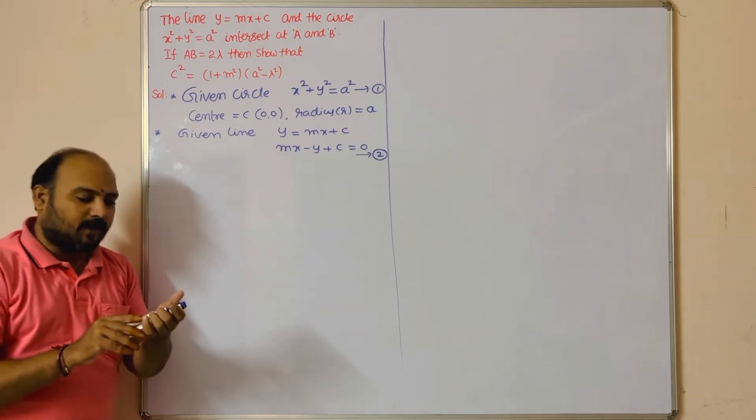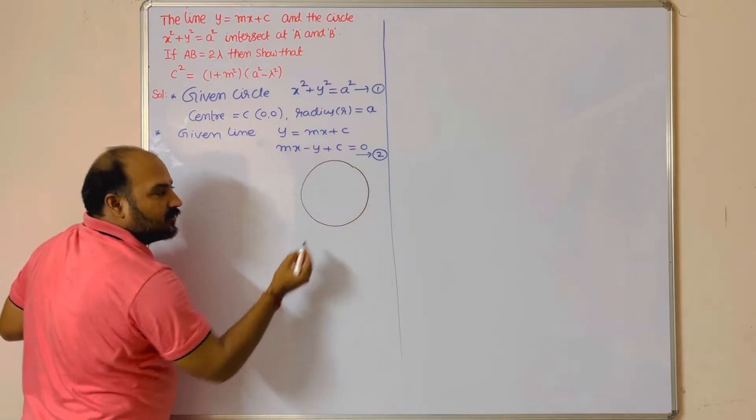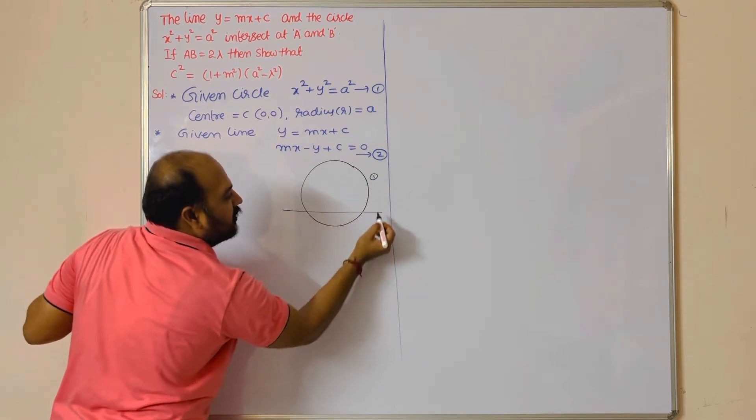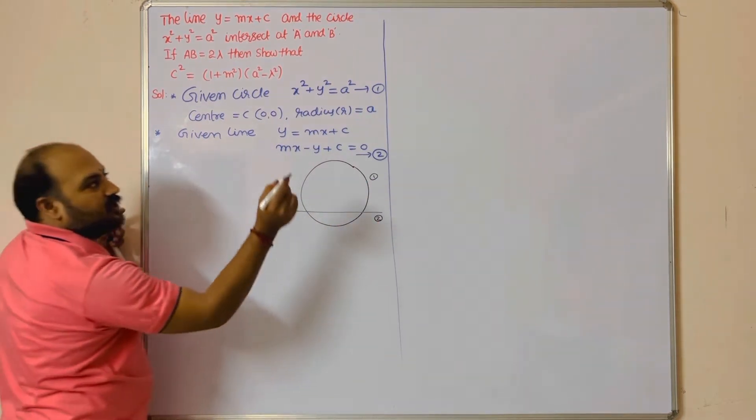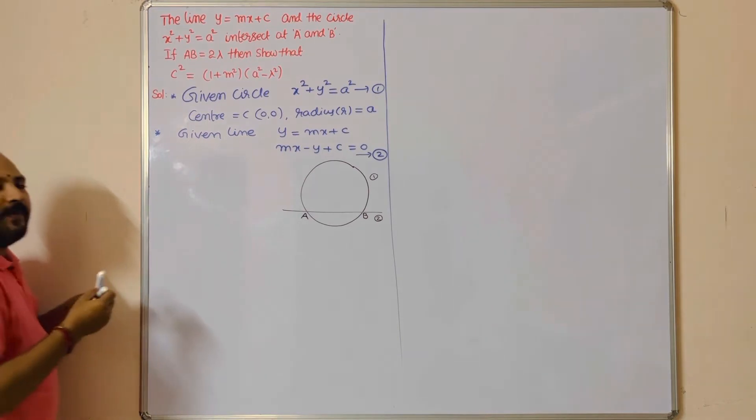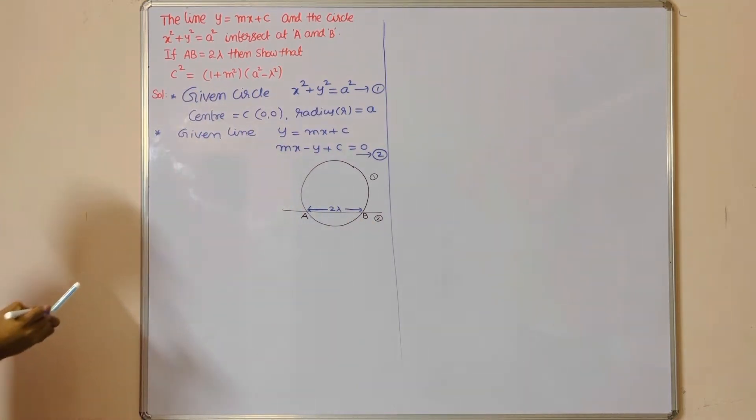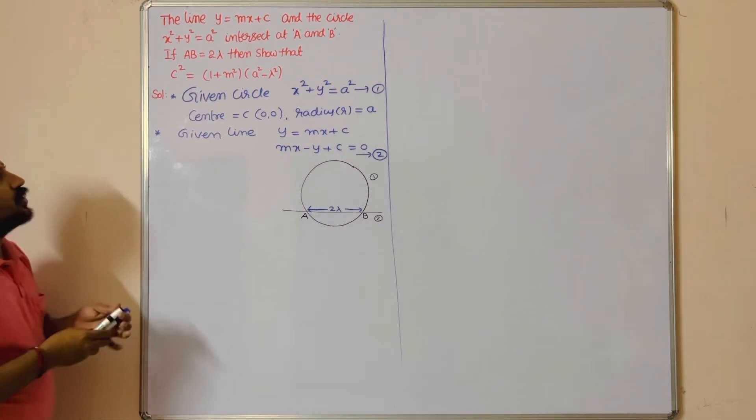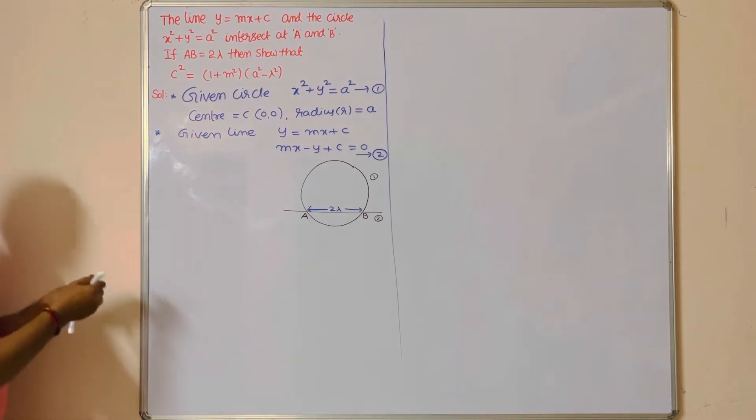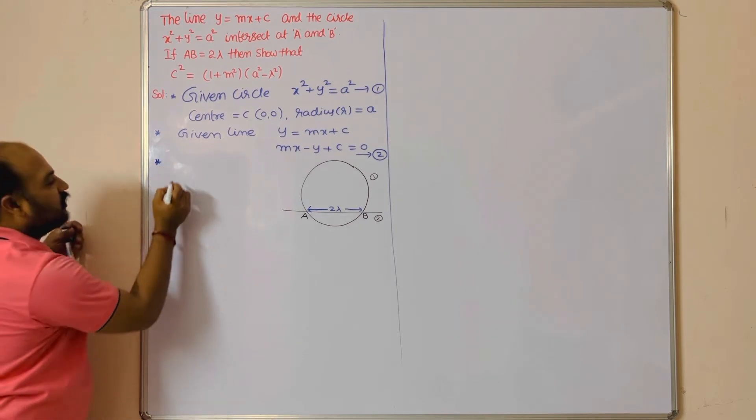They are asking to find the condition if AB = 2λ. Observe the figure here, students. This is the circle equation, and this line equation 2 cuts—this is equation number 1, this is equation number 2. Equation 2 cuts the circle at points A and B. Intersect. This length AB = 2λ. AB means what? Length of chord formula: 2√(r² - d²).